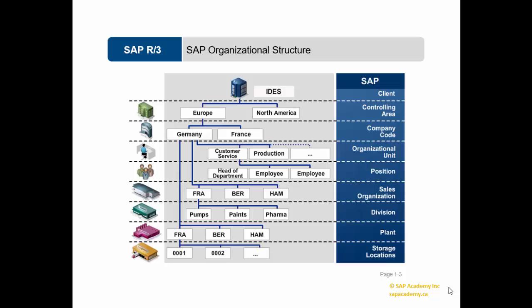Controlling area: The controlling area in SAP enterprise structure is the central organizational unit within the CO module, assigned to operating concern. It is an environment where internal reporting to management is done by managing cost and revenue. It represents a closed system used for cost accounting purposes. A controlling area may contain one or more company codes, which can operate in different currencies if required.